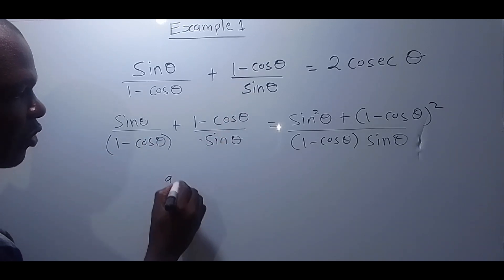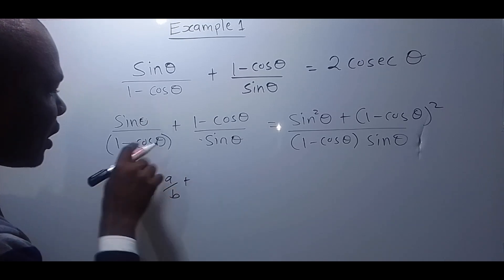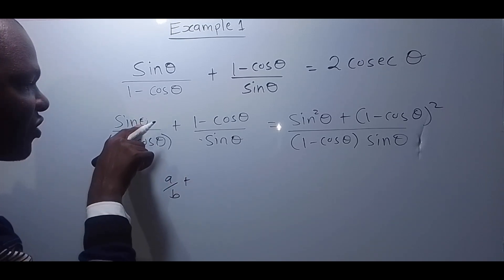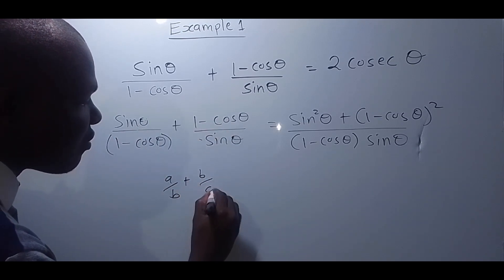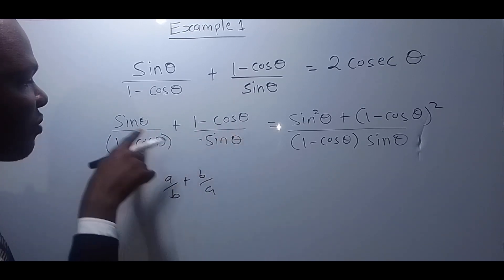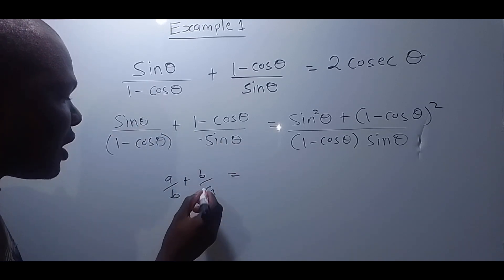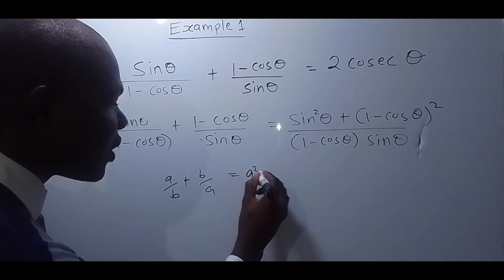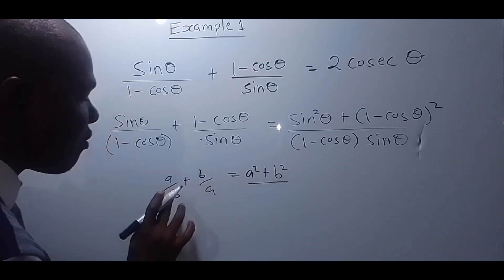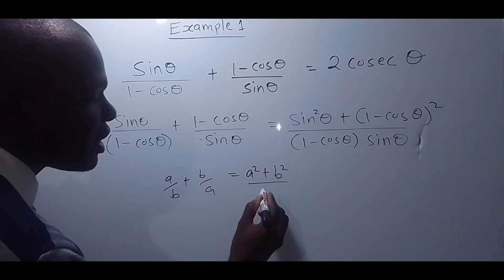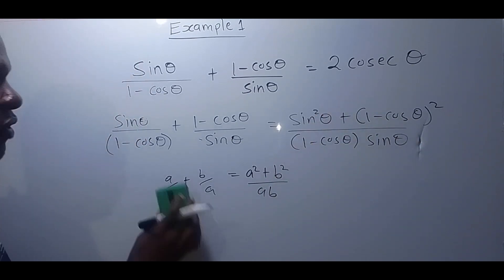To understand this step, remember: if you have A over B plus B over A, that is the same as A squared plus B squared over AB. So A times A gives A squared, plus B times B gives B squared, all over B times A, which is AB. That is exactly what we've done here.